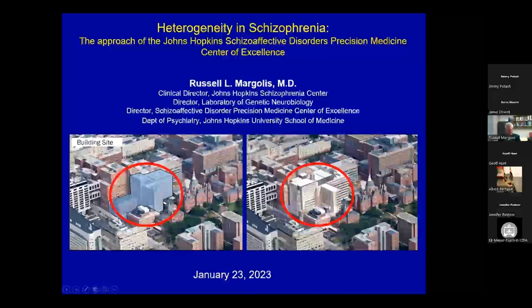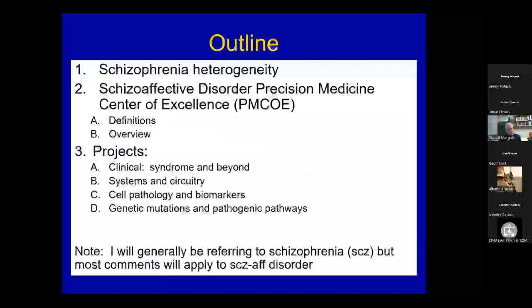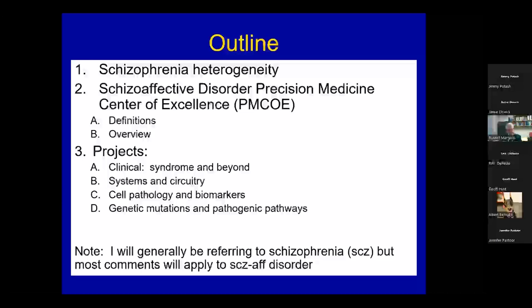This is the Division of Neurobiology, which I'll talk about a little bit later. The learning objectives will be pretty self-evident from what I speak about. What I will talk about is the nature of heterogeneity in schizophrenia, our PMCOE — what it is and how we're defining it — and then the various projects of the PMCOE and how each is designed to solve some of the problems in research and treatment of schizophrenia and related disorders. I'll be abbreviating schizophrenia as SCZ, and most comments also apply to schizoaffective disorder.